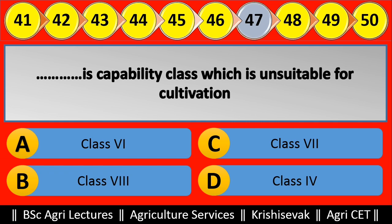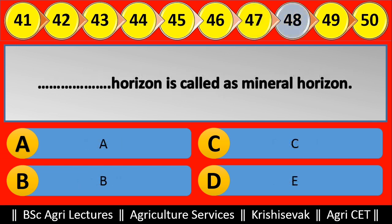Question 47: Blank is the capability class unsuitable for cultivation. Options are: (a) Class 6, (b) Class 8, (c) Class 7, (d) Class 4. Right answer is Class 8, option B.